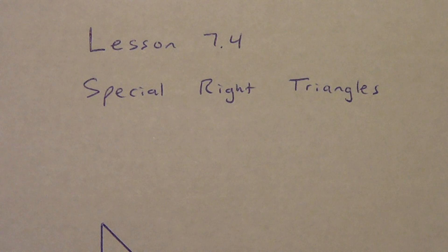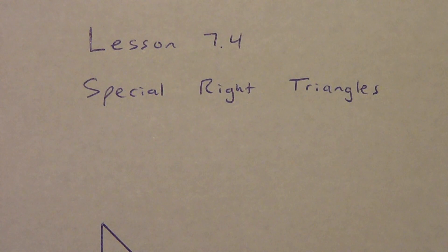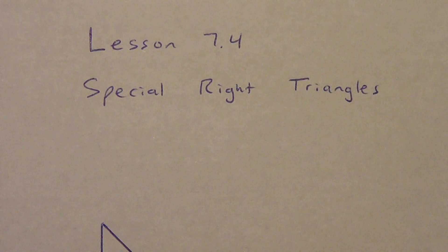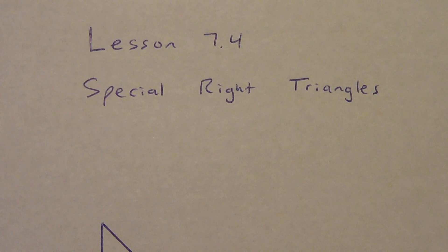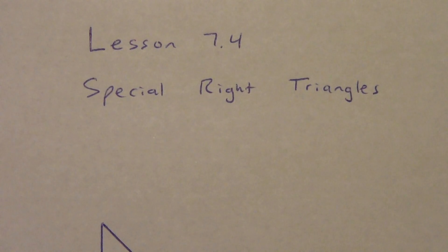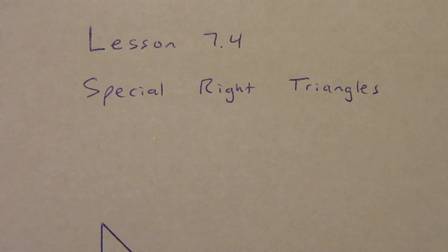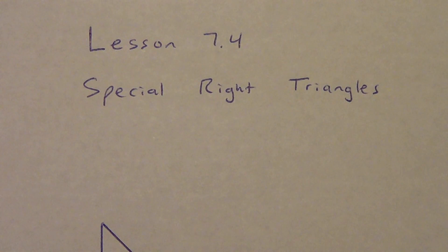Here we are, back at it one more time, this time with Lesson 7.4. Lesson 7.4 is about special right triangles. There are two different kinds of special right triangles we're going to talk about. They're called special right triangles because later on we're going to learn how to do some trigonometry with different angle measurements, but if we have these two kinds of triangles, we don't need to use trigonometry or decimals — we can use exact answers instead. The first video will show you the triangles and how we come up with the numbers, and the second video will show you how to find missing side lengths.